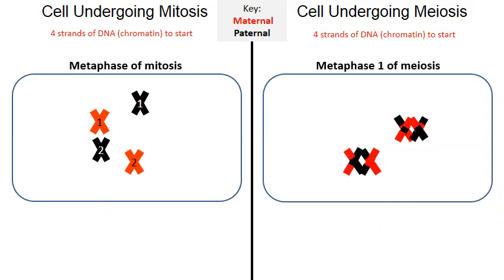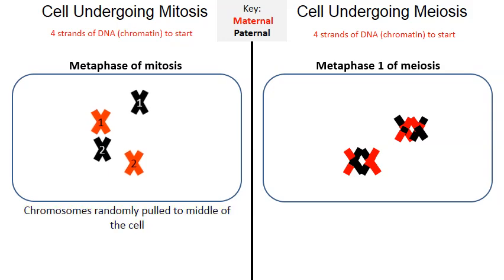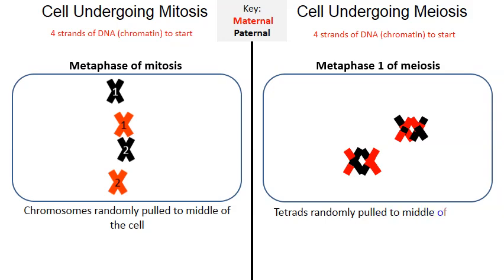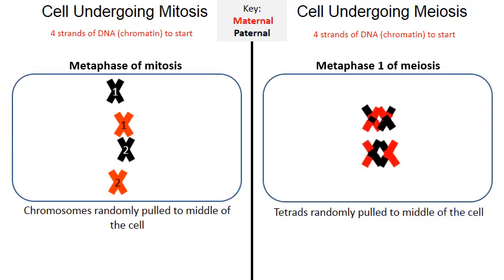Now we're ready to move into the metaphase stage. In metaphase of mitosis on the left, spindle fibers pull the chromosomes randomly to the equator or the middle line of the cell. On the right-hand side, spindle fibers pull the tetrads randomly to the equator or middle line of the cell.